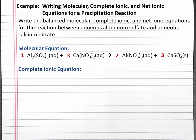To write the complete ionic equation, we're going to break apart any strong electrolytes. A strong electrolyte is a soluble salt or a strong acid. In this case, we just have soluble salts to break apart. Since aluminum sulfate is a soluble salt, it shows up as aqueous in our reaction. The coefficient of 1 times the subscript of 2 aluminum in aluminum sulfate means we have 2 aluminum 3+ ions, and we have 3 sulfate ions.